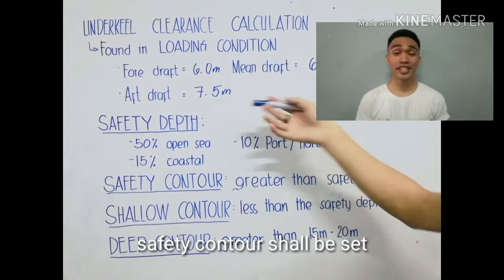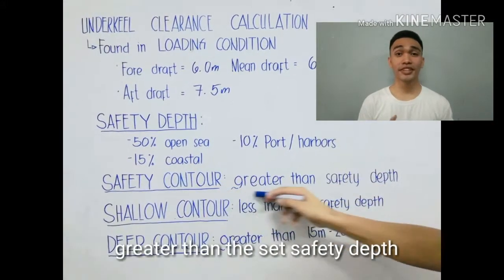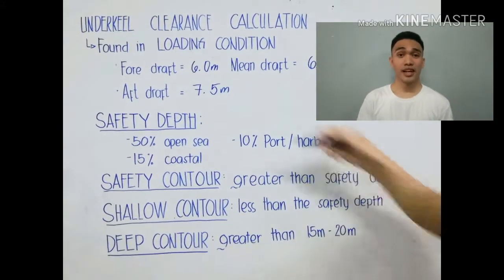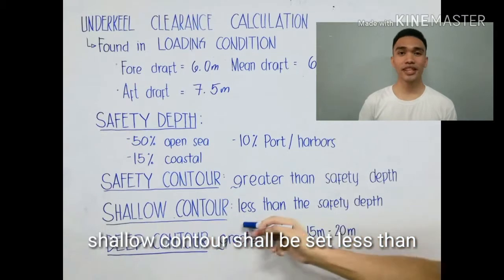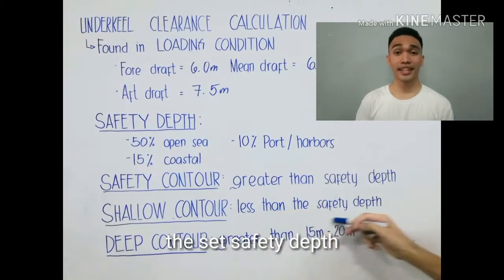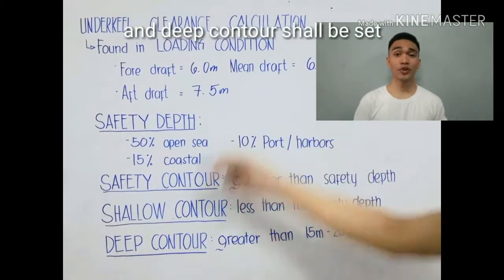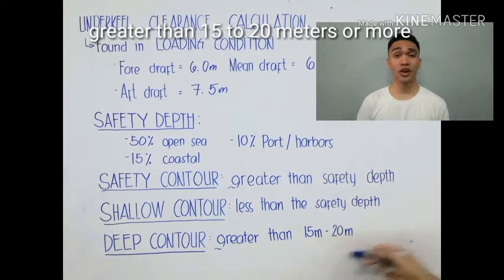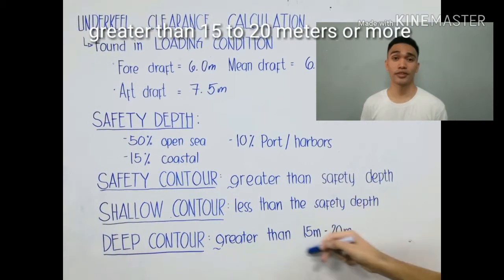The safety contour shall be set greater than the set safety depth, the shallow contour shall be set less than the set safety depth, and the deep contour shall be set greater than 15 to 20 meters or more.